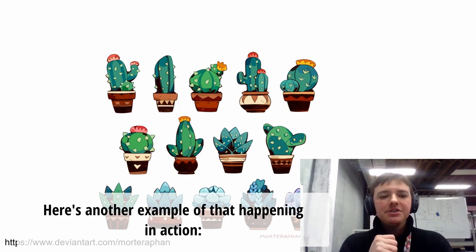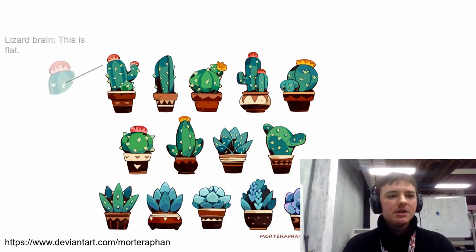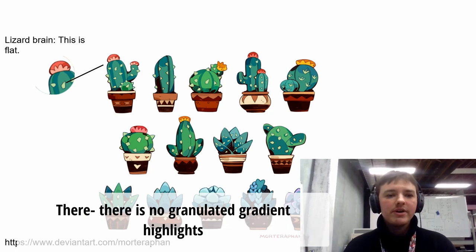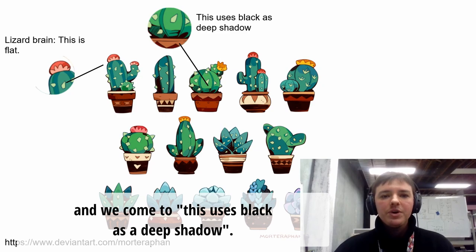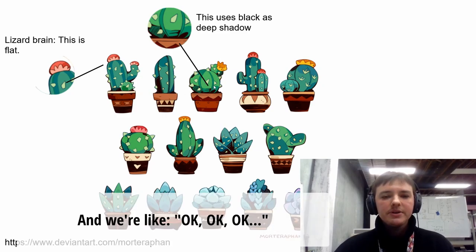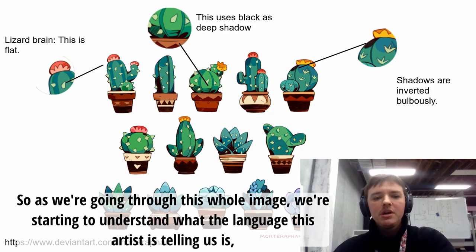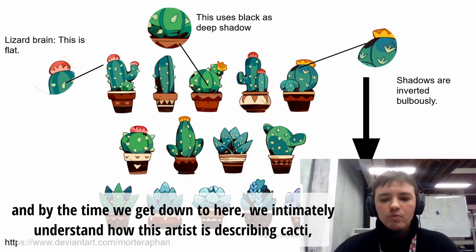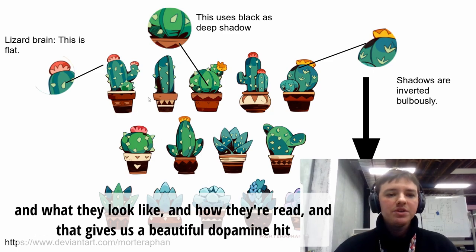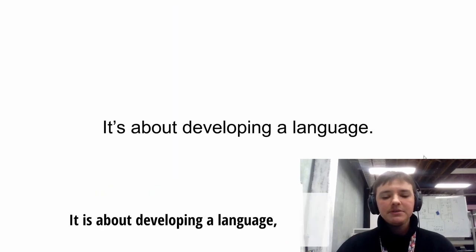Here's another example of this in action. We take this image and start reading from the top left. Our lizard brain says this is flat color all the way through — no granular gradients or shading. We keep going and see that black is used as a deep shadow. Shadows are rendered bulbously inverted. As we go through the whole image we start to understand the visual language the artist is using. By the time we get down to the cacti, we intimately understand how this artist describes and renders them — and that gives us a beautiful dopamine hit. It is about developing a language, and you can use anything to develop that language.